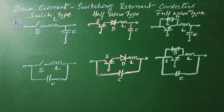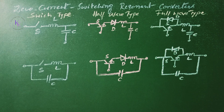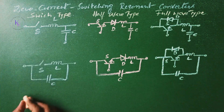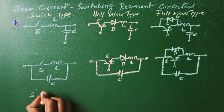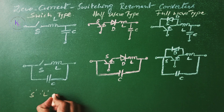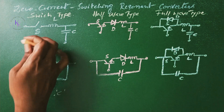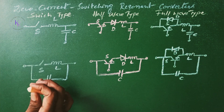Zero current switching resonant converters. The switches of a zero current switching resonant converter turn on and turn off at zero current. The resonant circuit consists of switch S, inductor L, and capacitor C. This is the switch type ZCS resonant converter.